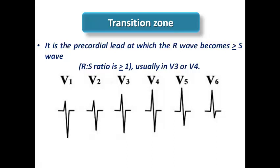We start with something called the transition zone. The transition zone is the precordial lead at which the R-wave becomes more than or equal to the S-wave amplitude. So it is the precordial lead in which the R-S ratio is more than or equal to 1. Normally it should be at V3 or V4 — in most normal conditions you will find the transition zone in one of these two leads.